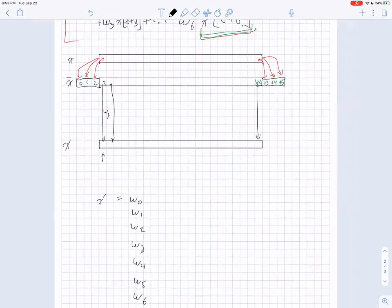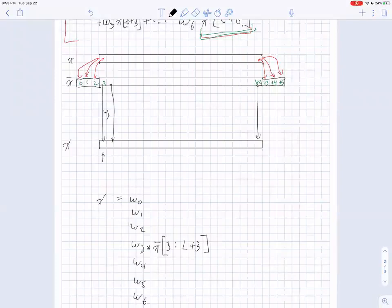So one is multiplied by W0, W1, W2, which for the instant are all zeros, W3, W4, W5, and W6. So W3 is the only interesting one. So we'll write that in. The question is for X bar, which elements do we actually want to have X bar? So for the W3 case, we want to discard the things that we've padded. And that corresponds to index three out to index L plus three.